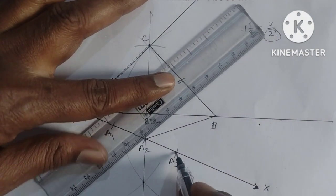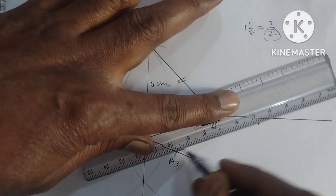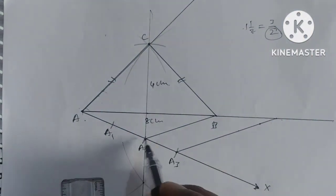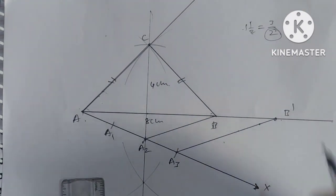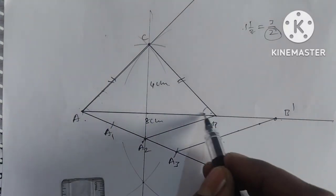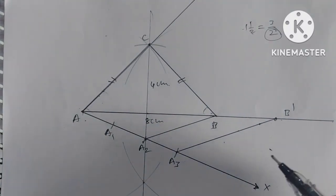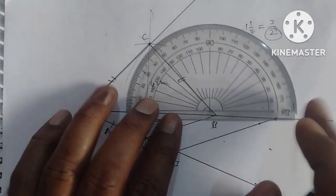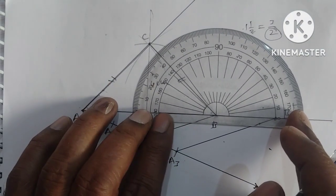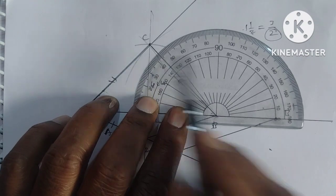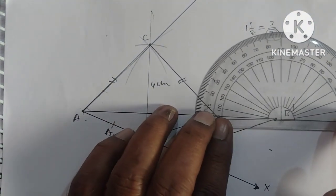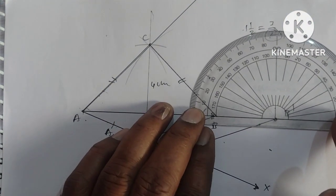From A2, we draw a line parallel to A3B to get point B dash.